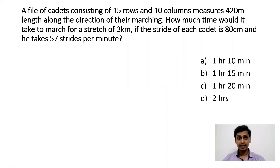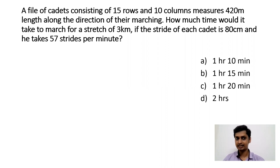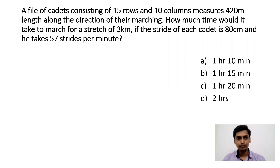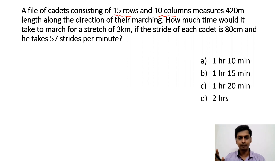A file of cadets consisting of 15 rows and 10 columns measures 420 meters length along the direction of their marching. How much time would it take to march for a stretch of 3 km if the stride of each cadet is 80 cm and he takes 57 strides per minute? This question is purely based on trains crossing each other or a train crossing a platform. The 15 rows and 10 columns information is unnecessary — you don't need to bother about that.